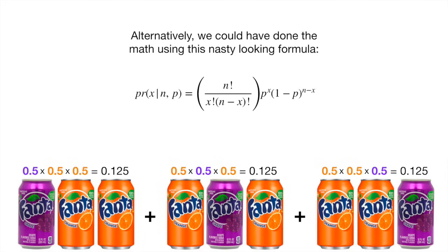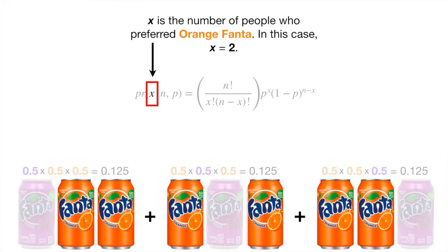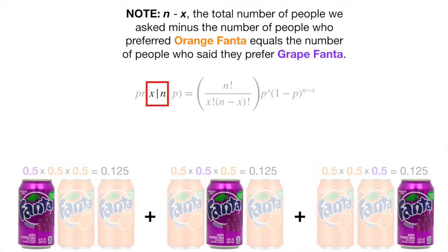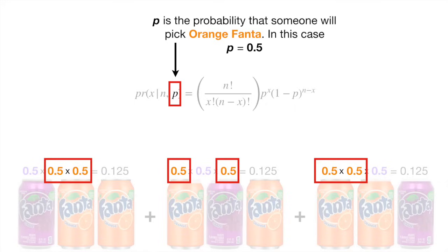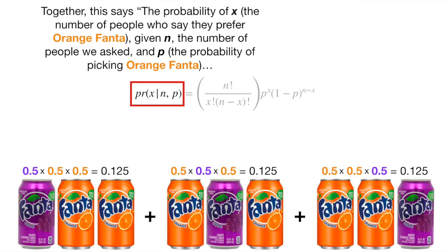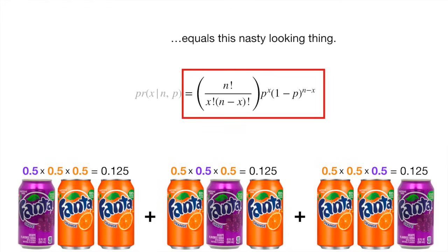Alternatively, we could have done the math using this nasty looking formula. In this case, x equals 2. n is the total number of people we asked — in this case, n equals 3. Note: n minus x, the total number asked minus the number who preferred orange Fanta, equals the number who said they prefer grape Fanta. p is the probability that someone will pick orange Fanta — in this case, p equals 0.5. Note: the probability that someone might prefer grape Fanta is 1 minus p. Together, this says the probability of x given n and p equals this nasty looking thing.